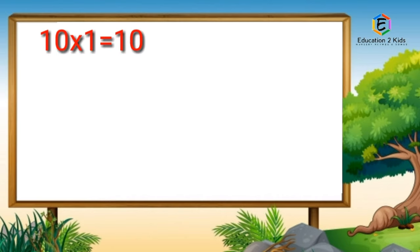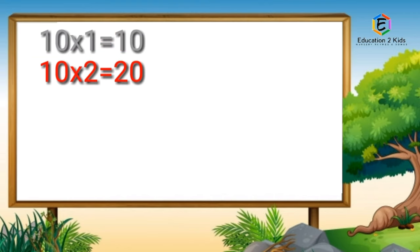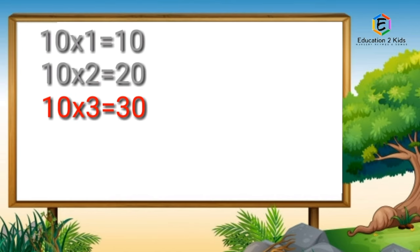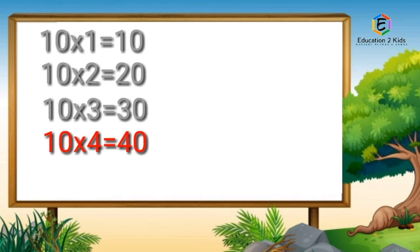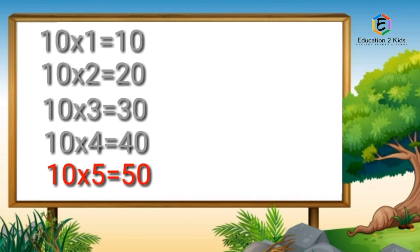Ten ones are ten. Ten twos are twenty. Ten threes are thirty. Ten fours are forty. Ten fives are fifty.